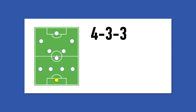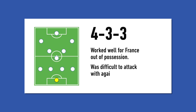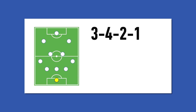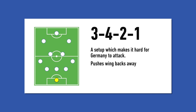There are many options that England can go for. The 4-3-3, as mentioned, worked well out of possession for France, although it made it difficult for England to attack with against Scotland where an attacking player was needed in the middle. A back three could work, and originally when the match came up I felt this was the perfect option for England to stop Germany attacking — to push Germany's wide players away from the areas where they can be most dangerous and give a good platform to attack.